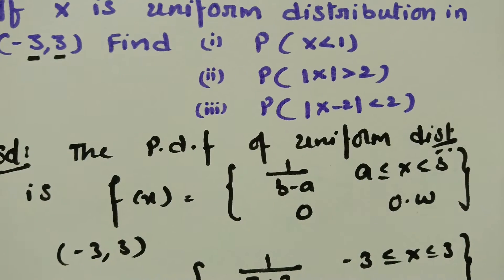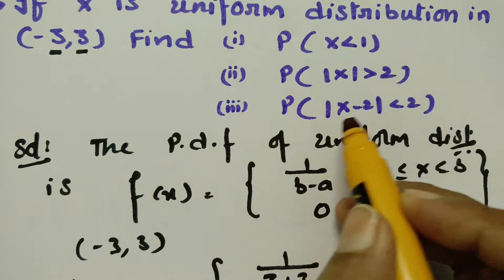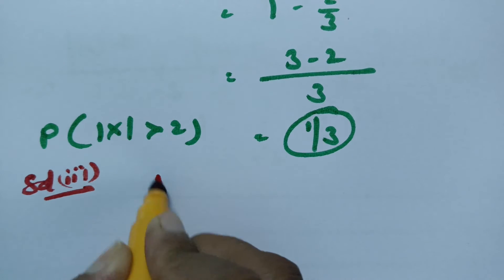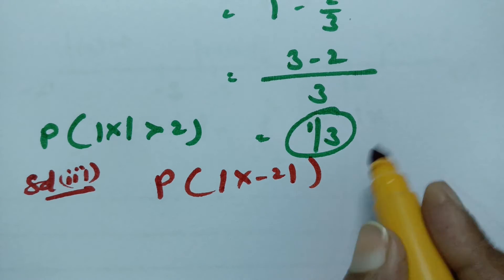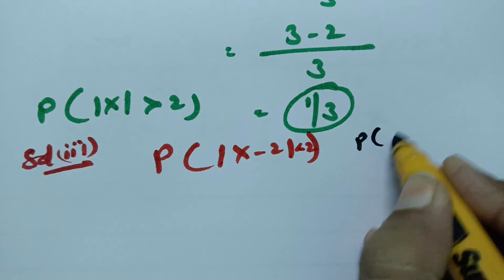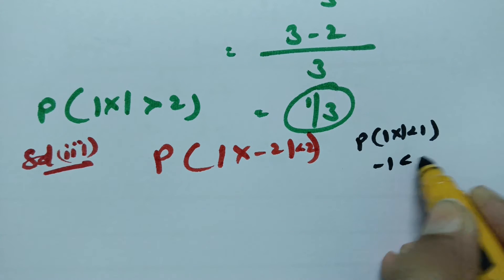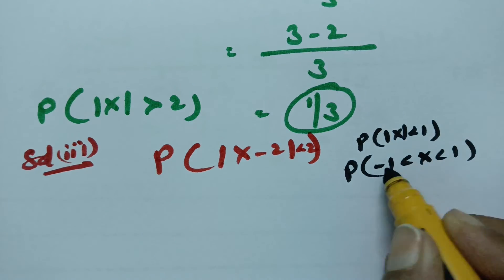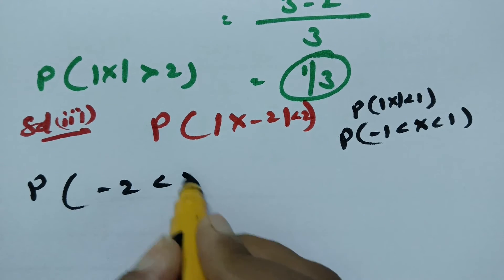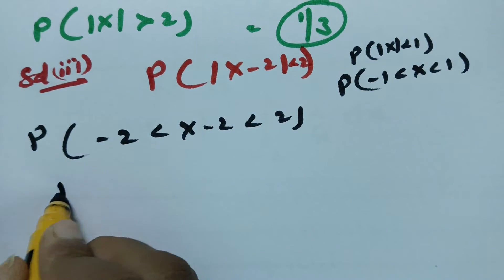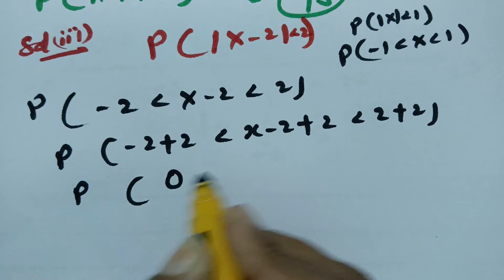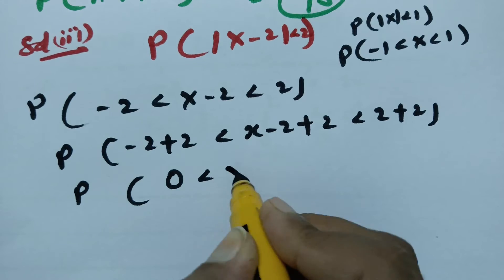Solution 3: find the probability of |X - 2| less than 2. This means X - 2 lies between -2 and +2, i.e., -2 < X - 2 < 2. Adding 2 throughout gives 0 < X < 4. So we need the integral from 0 to 4 of f(x) dx.